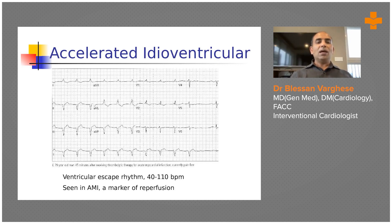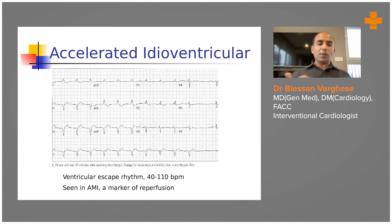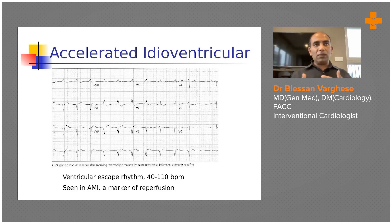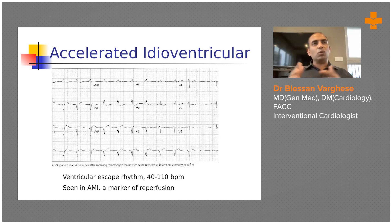This is a ventricular escape rhythm, otherwise called accelerated idioventricular rhythm (AIVR). The rate is between 40 to 110 beats per minute. It looks like a sinus nodal rhythm by rate, but it is not sinus nodal because there is no P wave preceding the QRS complex and the QRS is widened - meaning it originates from the ventricle. The clinical implication is that it is usually a sign of reperfusion in acute myocardial infarction following thrombolysis or primary PCI. You should not confuse it with ventricular tachycardia and should not shock the patient - it is a harmless, good rhythm indicating reperfusion.